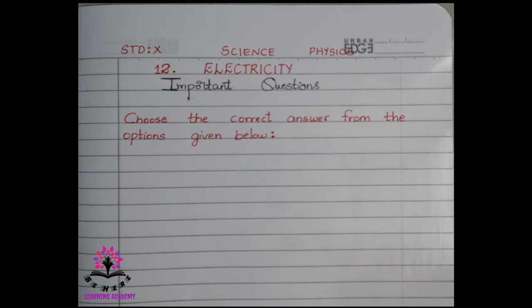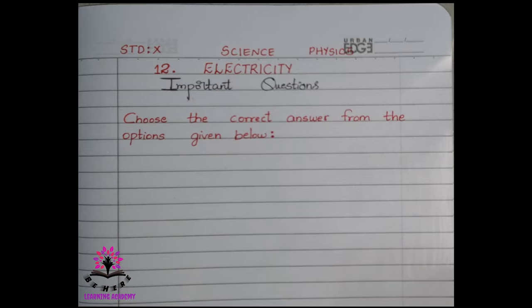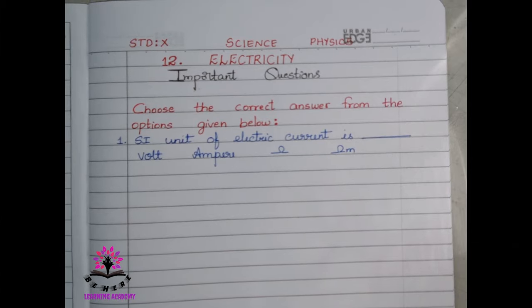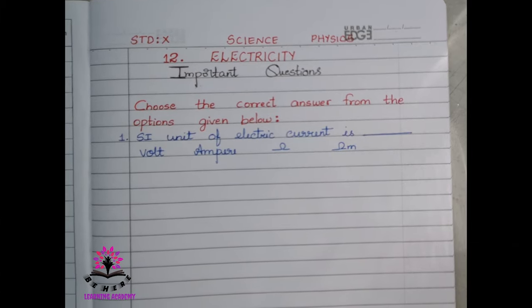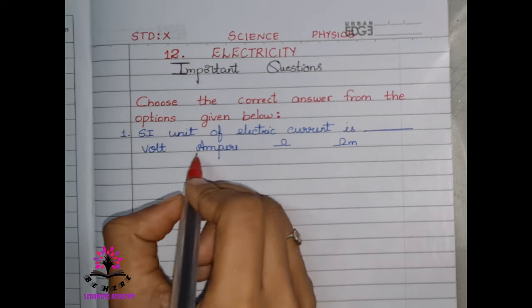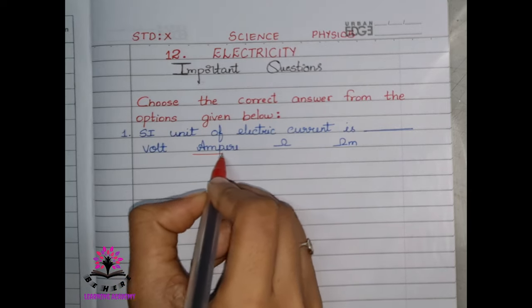Hello students, today we are going to study some important questions from Chapter 12, Electricity, Class 10 Science. First question: the SI unit of electric current is dash. Options: old, ampere, ohm, ohm meter. The right answer is ampere.